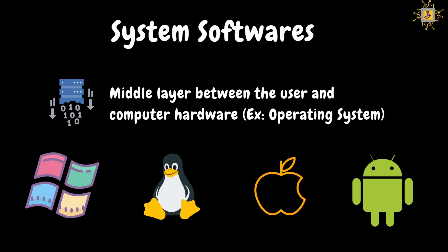So those are the examples of system software — operating systems like Windows, Linux, Mac, and Android. Now let's talk about application software.